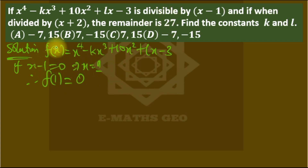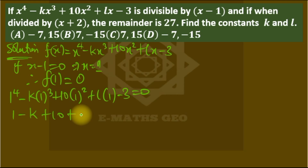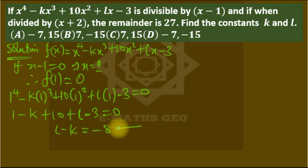Substituting x = 1: we have 1 raised to power 4 minus k times 1 raised to power 3 plus 10 times 1 squared plus l times 1 minus 3, and this must equal 0 for it to be divisible. So we get 1 minus k plus 10 plus l minus 3 = 0, which simplifies to l minus k = -8. We call this Equation 1.